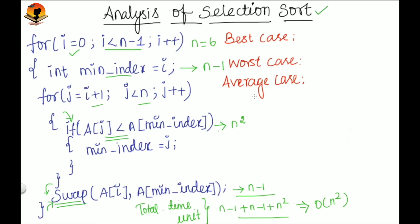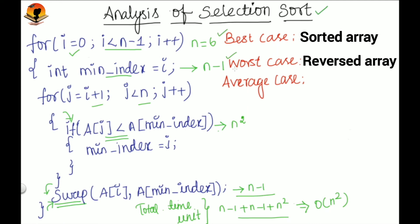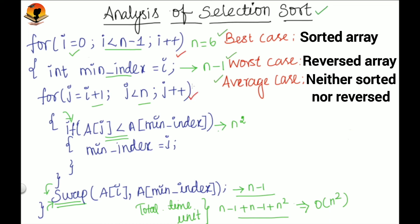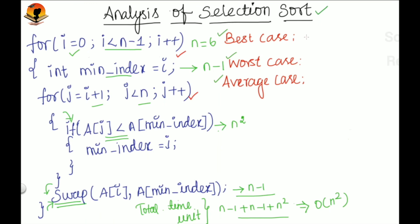Now, what are the best, worst, and average cases? The best case occurs when the input array is already sorted, the worst case occurs when the input array is completely in reverse order, and for the average case the input array is neither sorted nor reversed. However, whatever the input array arrangement, these two loops will run completely regardless of the element arrangement. So in all cases — best, worst, and average — the time complexity for the selection sort algorithm is O(n²).